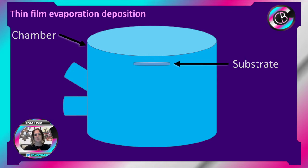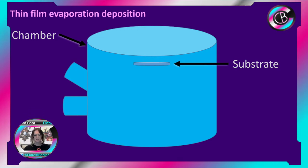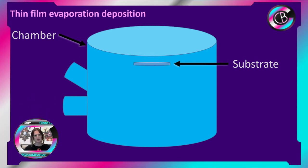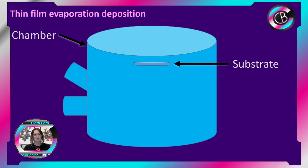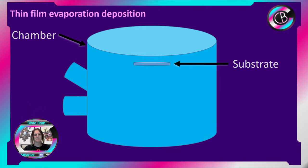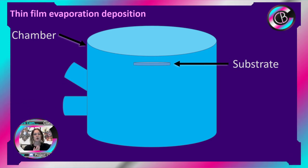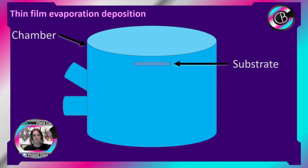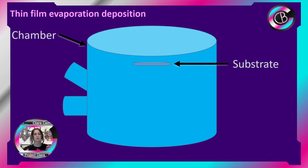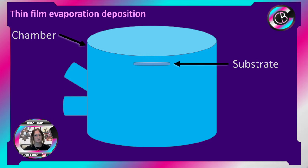Inside the chamber we put our substrate — the thing that we want to grow our thin films on. For example, I worked for a company that put metal on the inside of crisp packets, so in that case the substrate was a thin flexible plastic. I also talked about putting thin films onto glass lenses, so there the substrate would be the glass. That's our substrate and it goes inside our chamber.